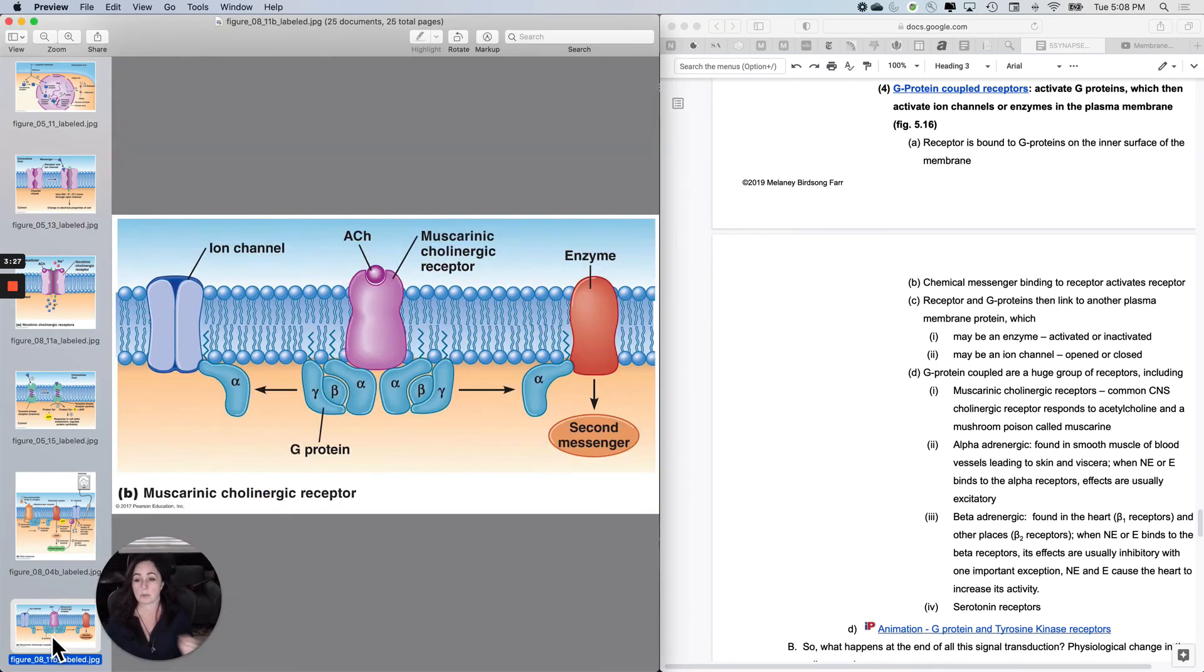Here's another example. Muscarinic cholinergic receptors work this way. So here's the receptor alpha, beta, and is that gamma? I can't remember. They're in the membrane. These slide through and smack into that ion channel or this thing right here to open it.